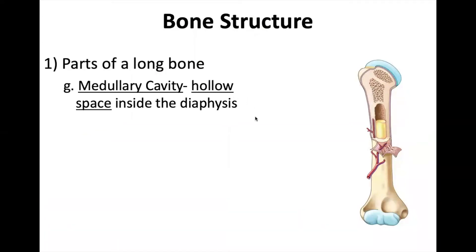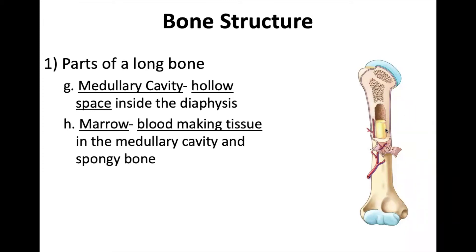The medullary cavity is the hollow space inside the diaphysis. Inside that hollow space is your marrow. In the diaphysis you have yellow marrow used for fat storage, and in that fat you store calcium because your bones are made out of calcium — when you grow more bone, you don't have to look far to find calcium deposits. Up here in the spongy bone we have red marrow for blood production. Blood vessels go into the bone and reach up into the epiphysis. As red cells get made, they enter the blood vessels and go out into your circulatory system.